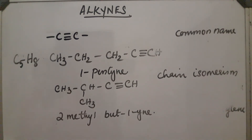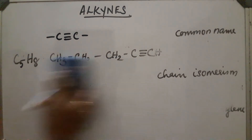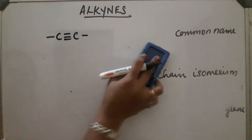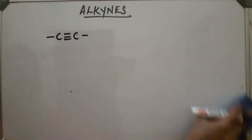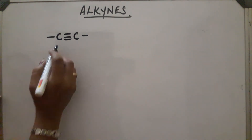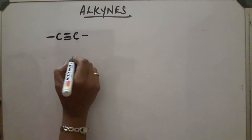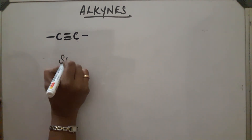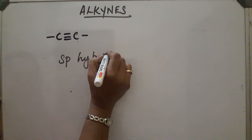Next, let us see the structure of the triple bond in alkynes. We know that alkynes contain a C triple bond C, and that these two carbon atoms are SP hybridized, showing SP hybridization.